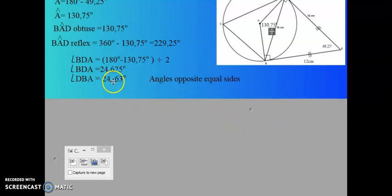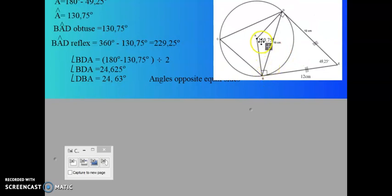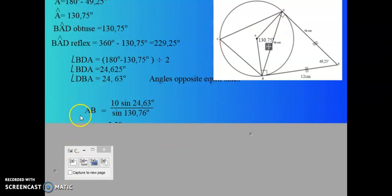Now I will use these angle sizes to calculate the length of these two sides by using the sine rule. So sine of angle B over AD will be equal to sine of A over DB. Or I can say that 10 over sine of A will be equal to AB over sine of angle D. If I manipulate now to make AB the subject of the equation, I will find AB is equal to 10 sine of 24.63 over sine of 130.76. That gives me a radius of 5.5 centimeters.